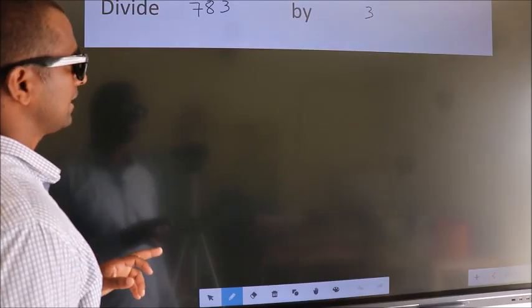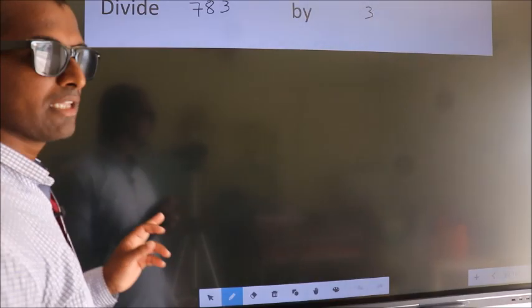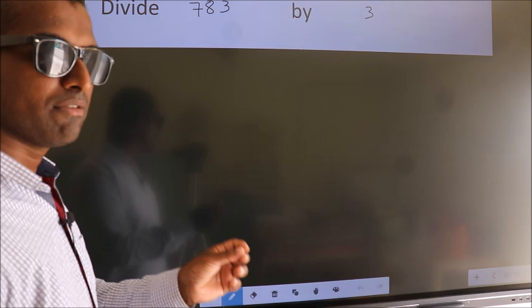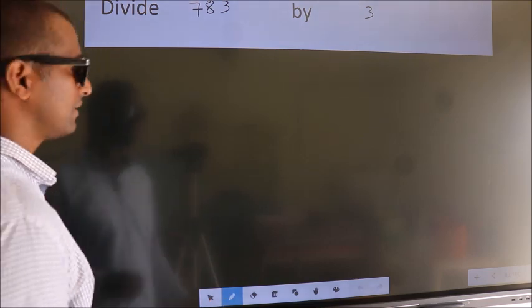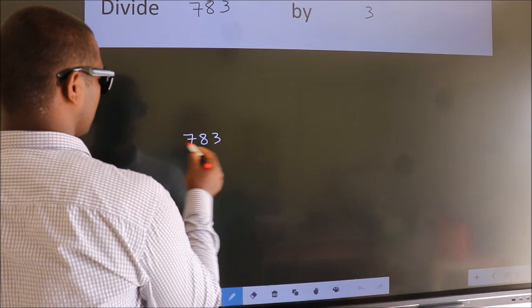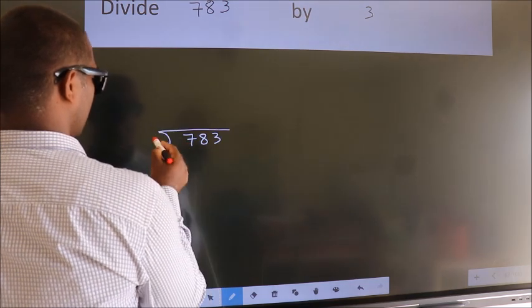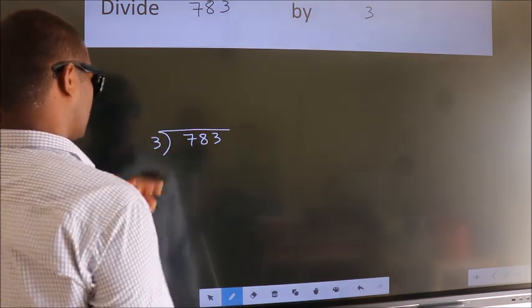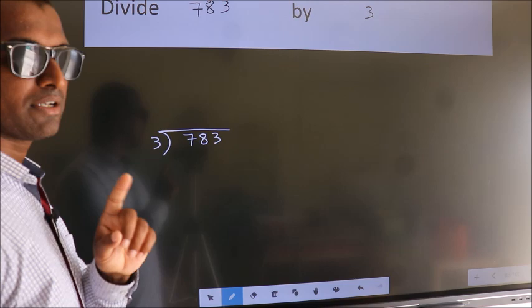Divide 783 by 3. To do this division, we should frame it in this way. 783 here, 3 here. This is your step 1.